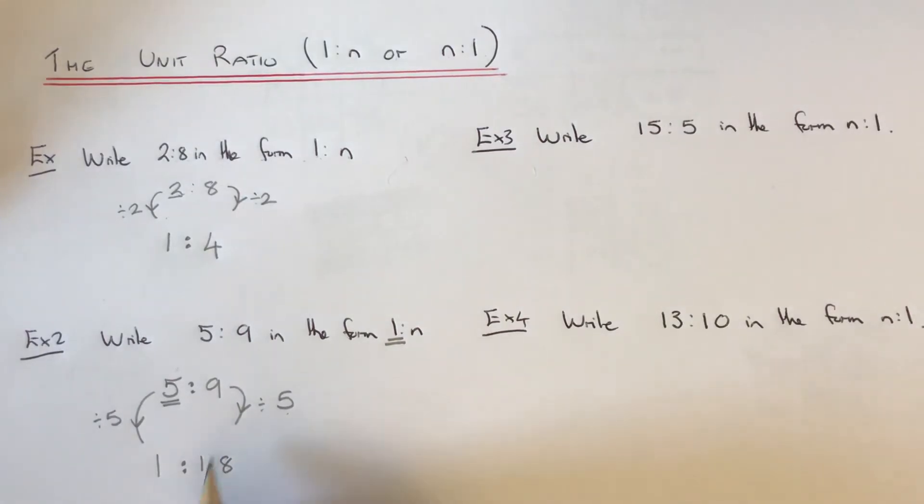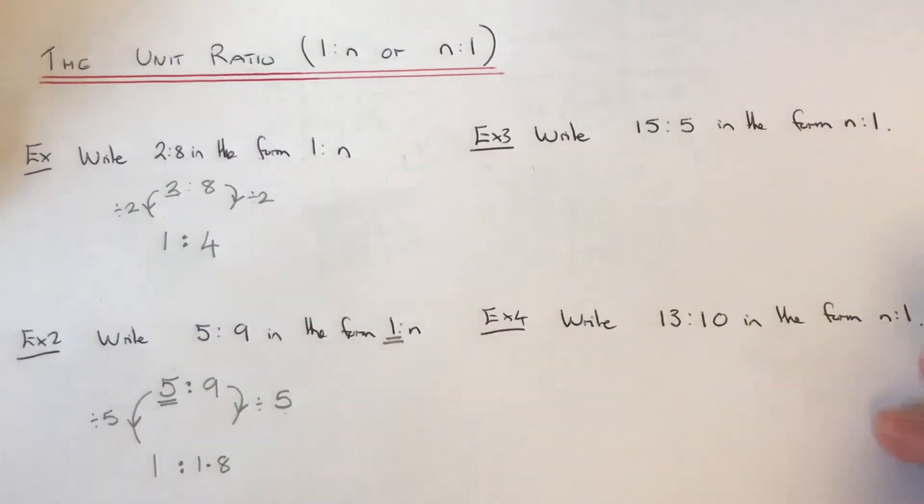If you don't have your calculator, you can leave your answer as an improper fraction, as 9 fifths. So let's move on to example 3.